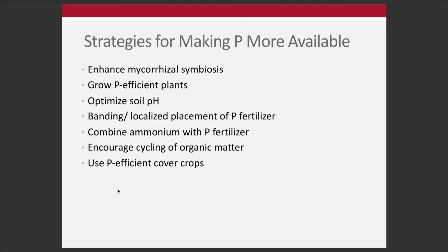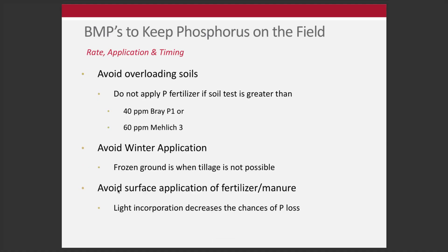Strategies for making phosphorus more available include: enhancing mycorrhizal symbiosis by reducing tillage and keeping lots of crops and cover crops growing; growing phosphorus-efficient plants; optimizing soil pH; banding or localizing placement of phosphorus fertilizer; combining ammonium with phosphorus fertilizer — as in MAP, DAP, and 10-34-0 — because ammonium acidifies the zone where the fertilizer is placed, making phosphorus more available; and encouraging the cycling and building of organic matter, all of which help make phosphorus more available to the crop.